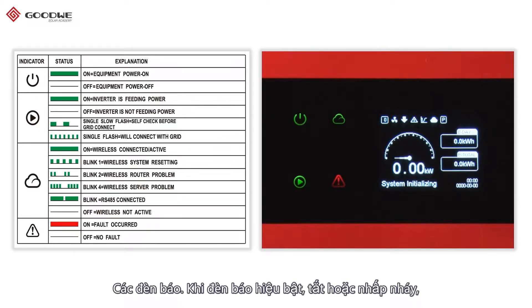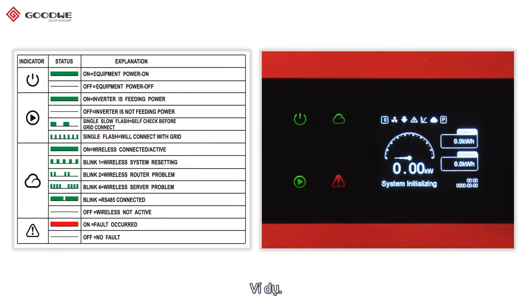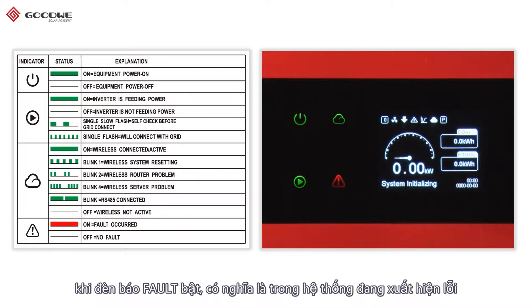Indicators: when an indicator is on, off, or blinking, it indicates something about the inverter. For example, when the fault indicator is on, there are errors in the system.